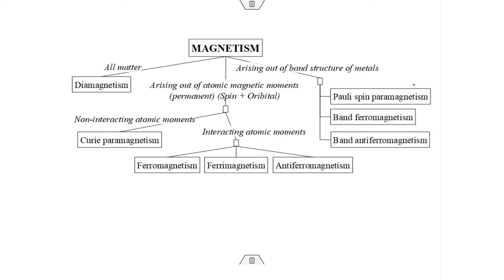When a field is applied, the aligning force competes with the disordering tendency of thermal energy. The paramagnetic susceptibility is very small — for oxygen at room temperature it is about 1.36 × 10⁻⁶ m³/kg. Despite this small value, paramagnetic susceptibility of oxygen is used in PET brain scans to determine which parts of the brain are active, helping detect brain defects.